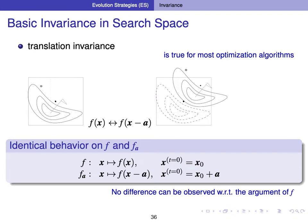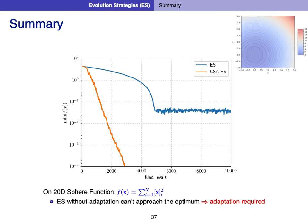CMA-ES has several other invariance properties. One is translation invariance, which is true for most optimization algorithms. Translation invariance means that shifting the search space and changing the initial point are equivalent — the algorithm is invariant to translations of the search space up to changing the initial point accordingly. This invariance is qualitatively different from invariance to monotonic transformations because it depends on the initial state.